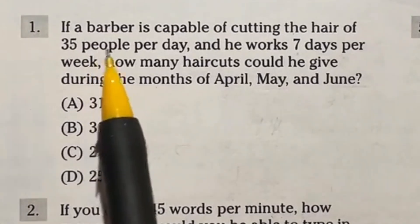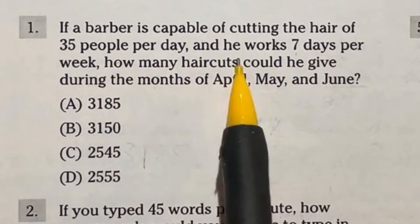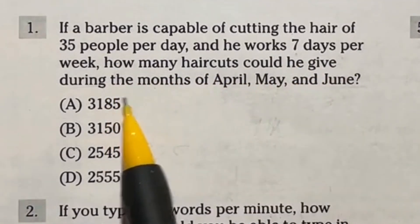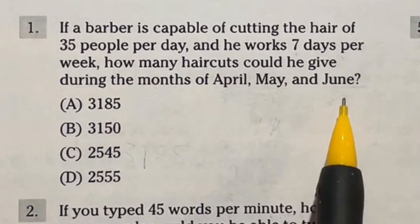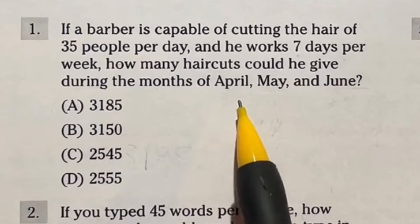Let's take a look at number one. It says if a barber is capable of cutting the hair of 35 people per day and he works seven days per week, how many haircuts could he give during the months of April, May and June? So first and foremost, you need to know how many days are in each of these months.